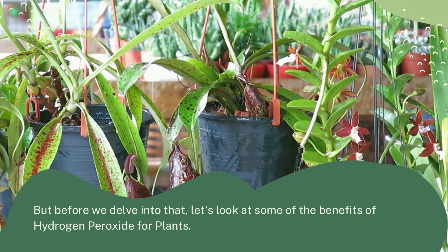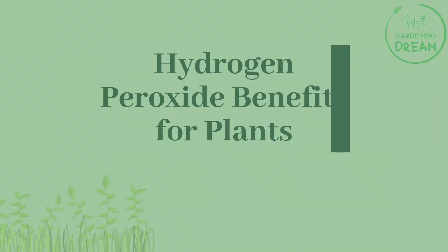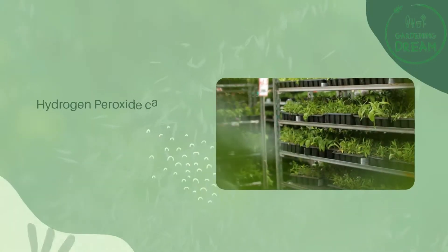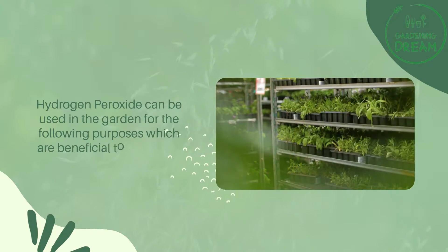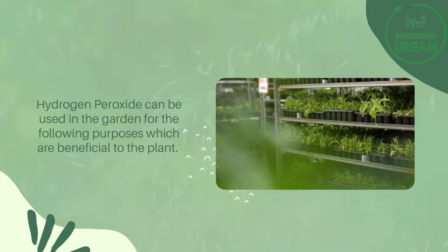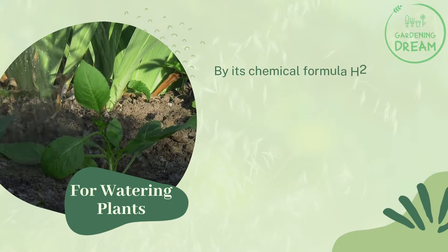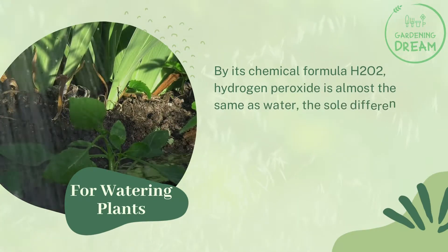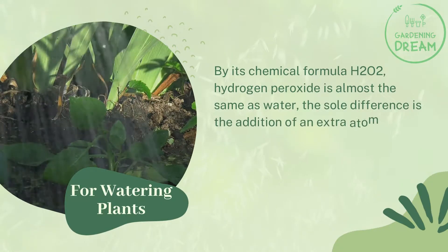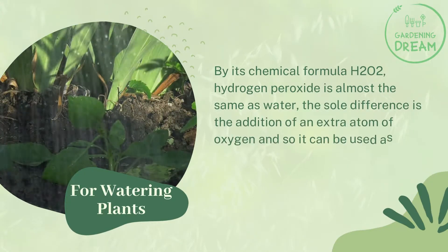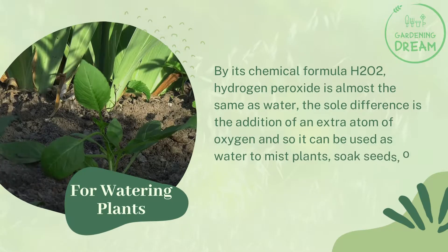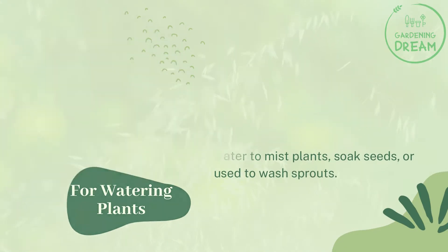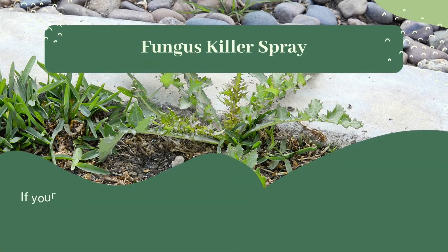Let's look at the benefits of hydrogen peroxide for plants. Hydrogen peroxide can be used in the garden for the following beneficial purposes. For watering plants — by its chemical formula H2O2, hydrogen peroxide is almost the same as water. The sole difference is the addition of an extra atom of oxygen. So it can be used as water to mist plants, soak seeds, or wash sprouts.